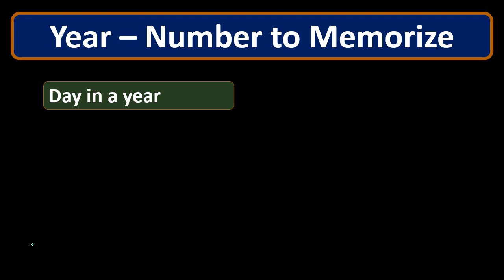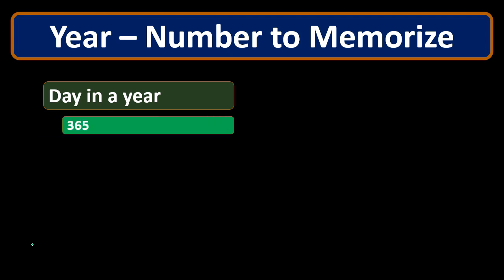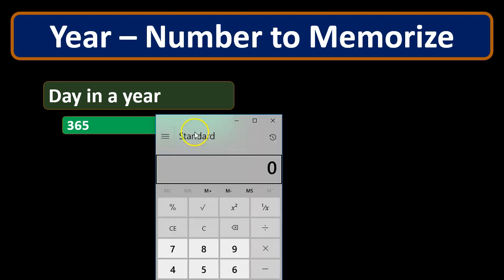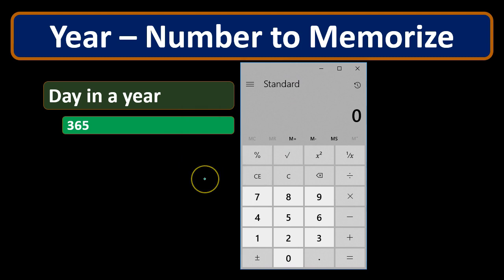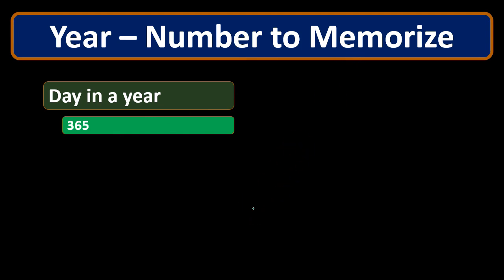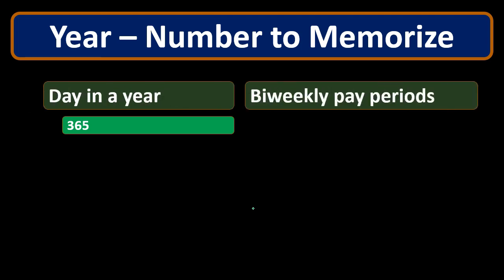Some key numbers to memorize as we go through payroll: 365 days in a year. Note there's a leap year occasionally, but we go with 365. That's different from the rounded estimates sometimes used in interest calculations — like 12 months times about 30 days equaling 360 — but for payroll we need to be more exact, so we use 365 days in a year.